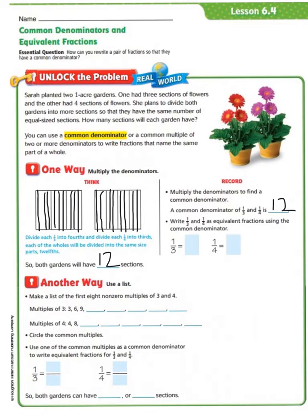We do this by multiplying the denominators to find a common denominator. A common denominator of one-third and one-fourth is found by multiplying our denominators three and four together, giving us 12. Write one-third and one-fourth as equivalent fractions using the common denominator 12. We multiply three by four to get 12, so we also multiply the numerator: one times four equals four. For one-fourth, we multiply by three to get 12, so one times three equals three. The equivalent fraction for one-third is four-twelfths, and for one-fourth is three-twelfths.